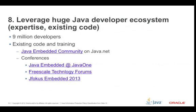Number eight: you can leverage a huge developer ecosystem — the expertise and existing code. There are 9 million developers in the world who know Java, which is a huge resource pool. Additionally, there's existing code and training in the Java Embedded Community on Java.net, and a variety of conferences. We recently held the Java Embedded Conference at JavaOne in October, and there's a new conference called JFokus Embedded 2013 in Stockholm in the first week of February.